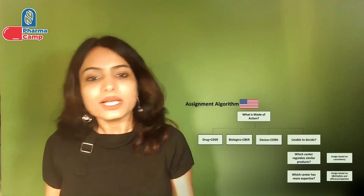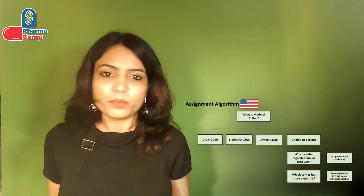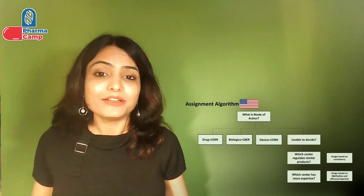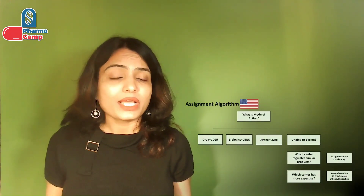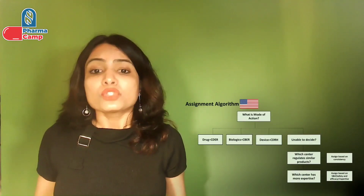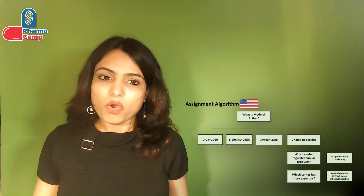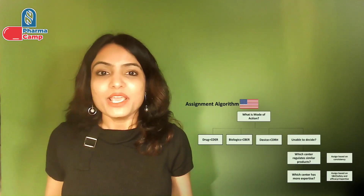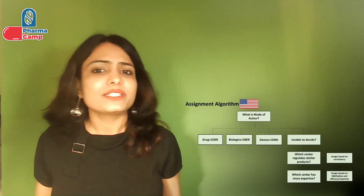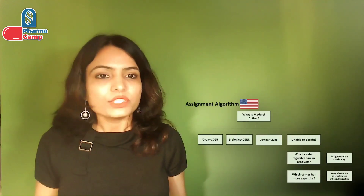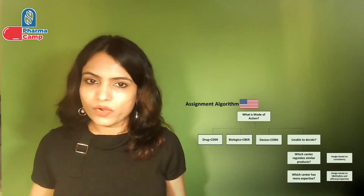OCP makes their assessment based on an assignment algorithm, which has three steps. In the first step, they make the assessment based on primary mode of action. If they are not able to decide the primary mode of action and there is still confusion, they go to the second step: they look at which center has already reviewed a similar application in the past, and assign the review center based on that. If they are still not able to decide, they go to the third step: they look at which center has the most experience with respect to safety and efficacy evaluation of such a product, and assign the center based on that criteria. This is the assignment algorithm OCP uses to decide which center will be the lead center for your application's review.